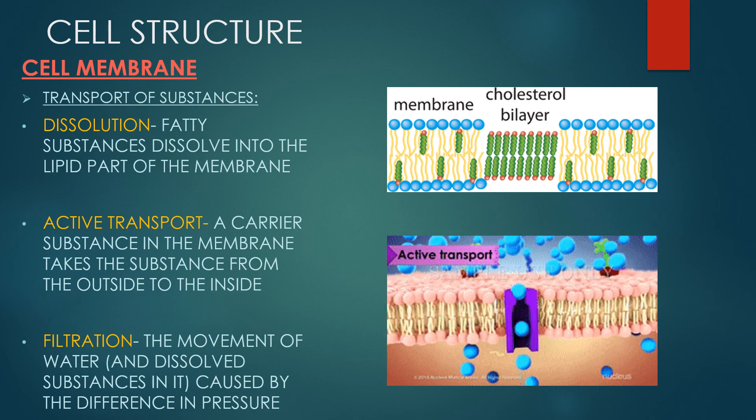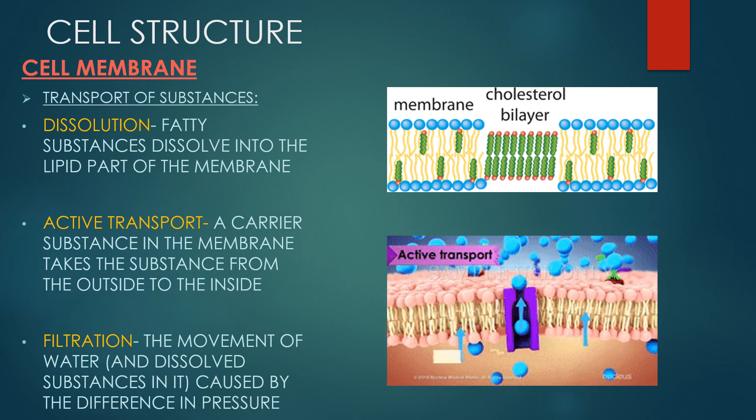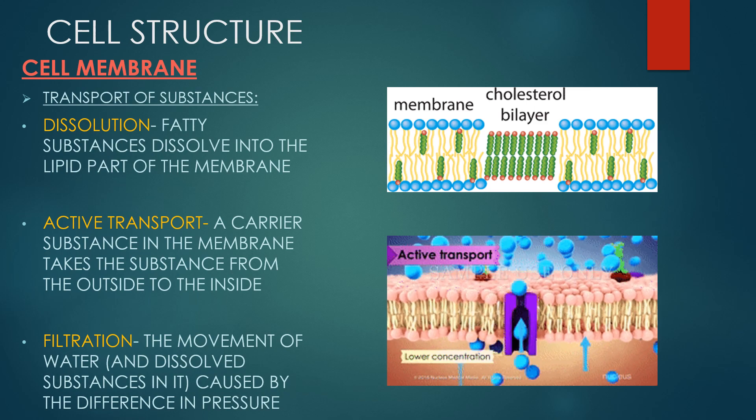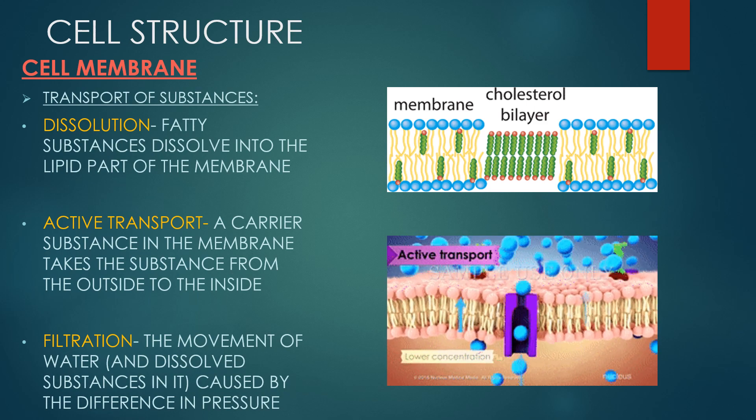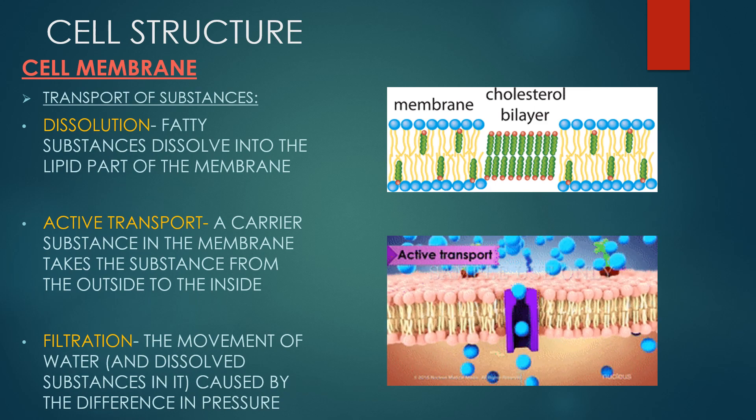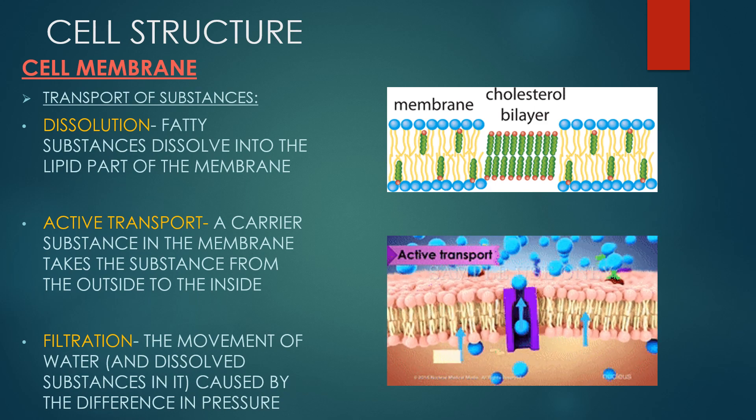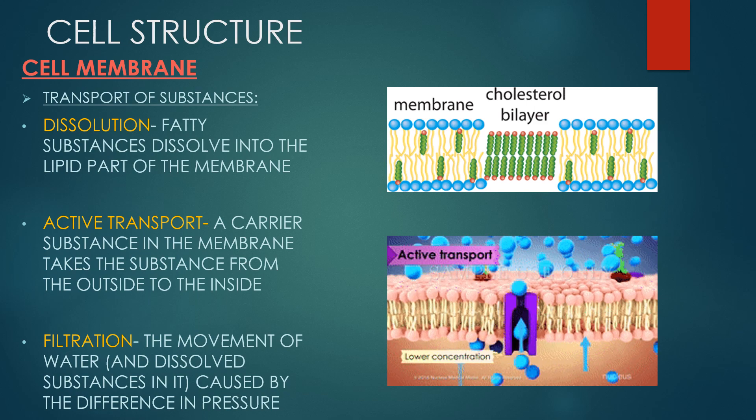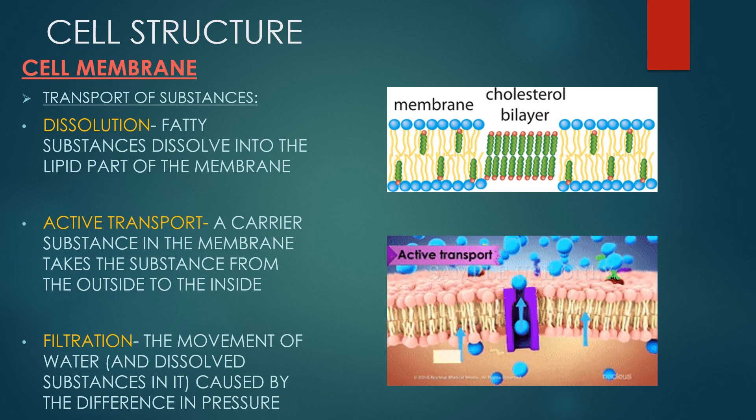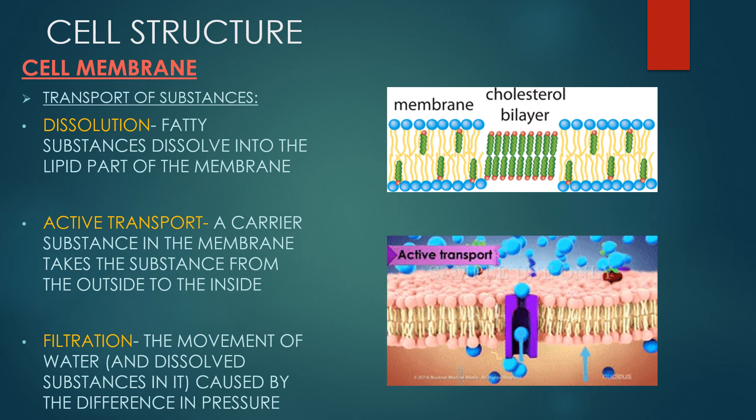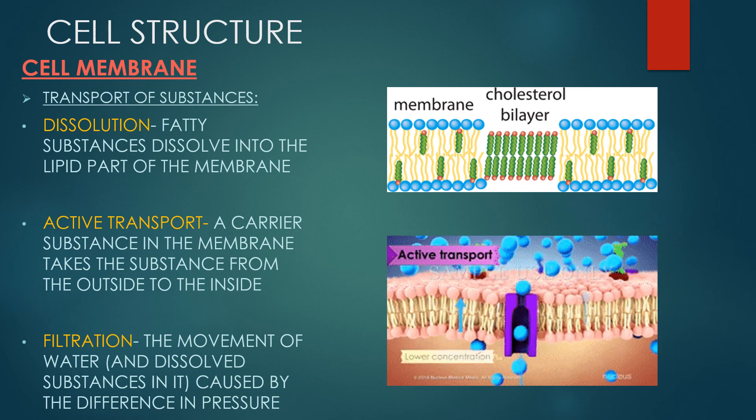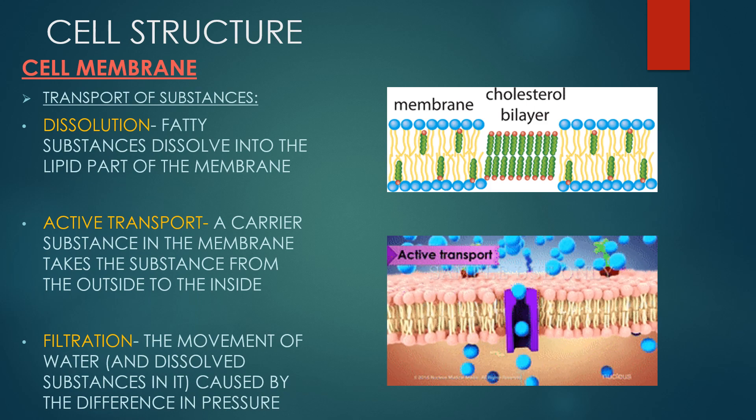Transport across the cell membrane is a tightly regulated process because cell function is highly dependent and maintains strict concentrations of various molecules. When a molecule moves down its concentration gradient it is participating in passive transport. Moving up the concentration gradient requires energy making it active transport.